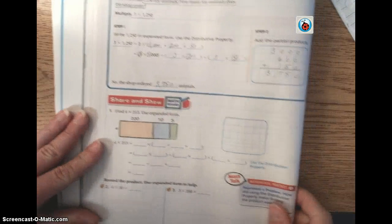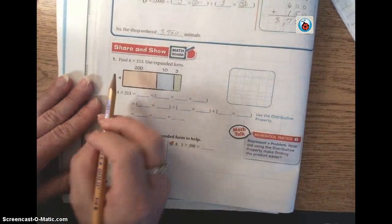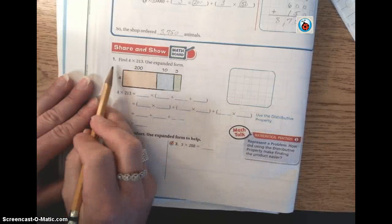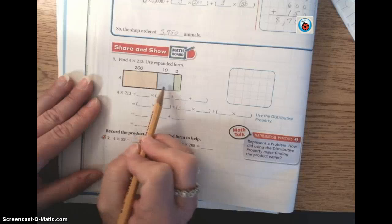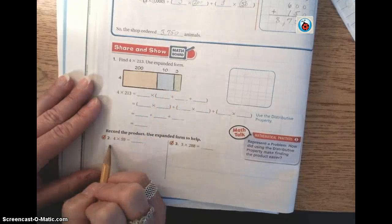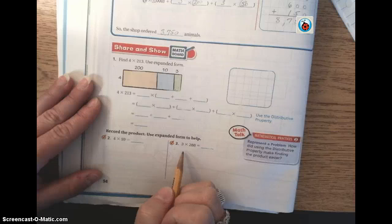You're going to move on down to the share and show. We'd like for you to complete numbers 1, 2, and 3. Please complete number 1 first so that you can go through the different steps and also your picture model is there for you. Number 2 and number 3 are the ones that are going to determine your groups.